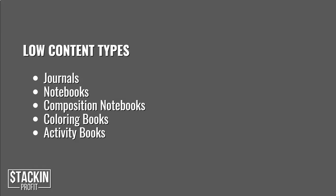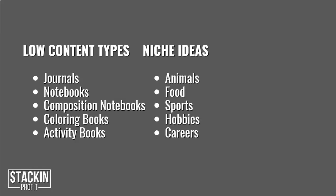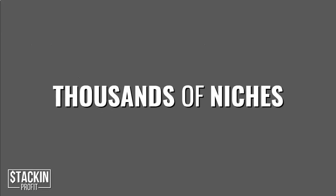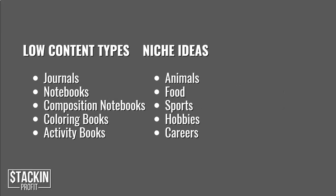You need niche ideas, and there are literally thousands just within these different book types. We have animals, food, sports, hobbies, and careers. Careers meaning job titles — things like teachers, doctors, nurses. Again, there are literally thousands of niches.